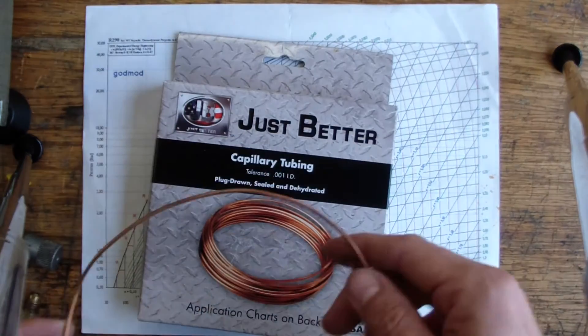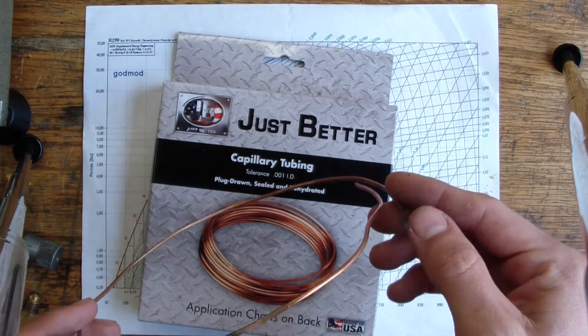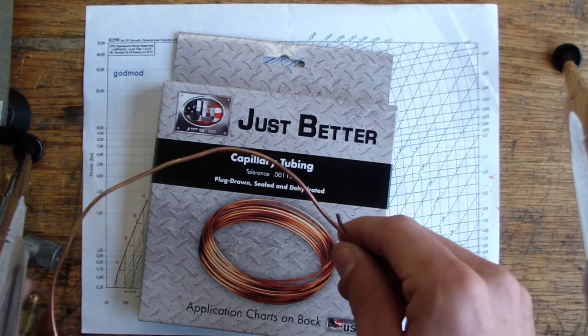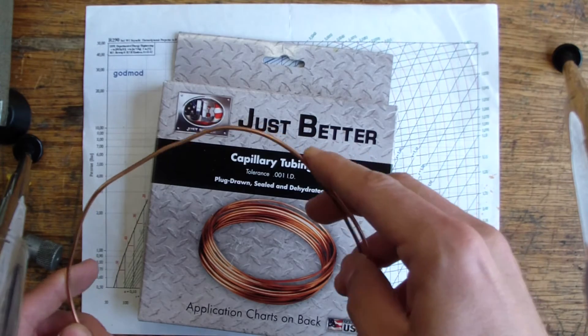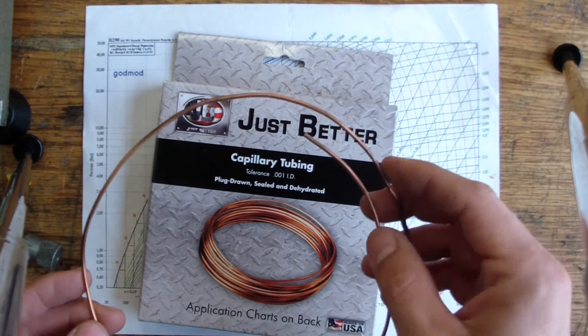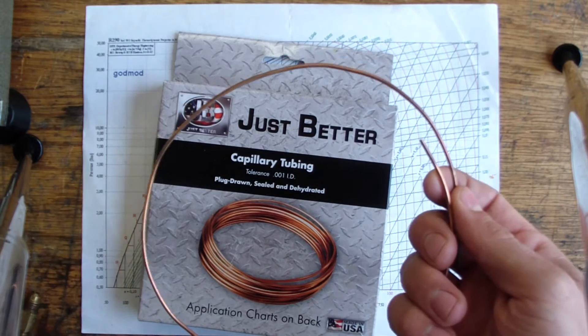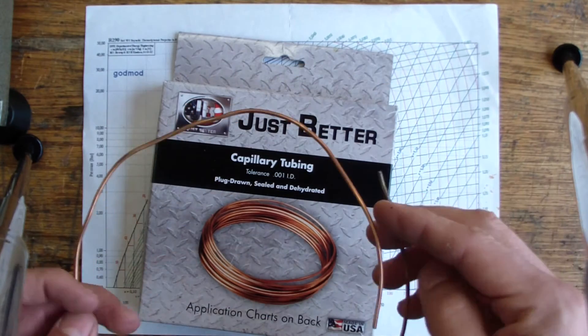So in a well designed system where the capillary tube is the right length, the heat exchangers and the capillary and the compressor are reasonably well matched, capillary tube has the ability to regulate sub cooling to a certain extent and keep the evaporator well fed.